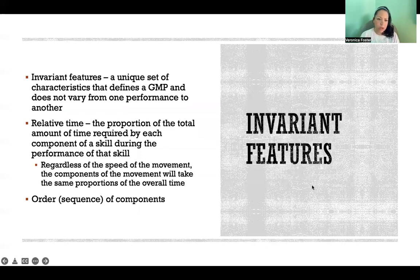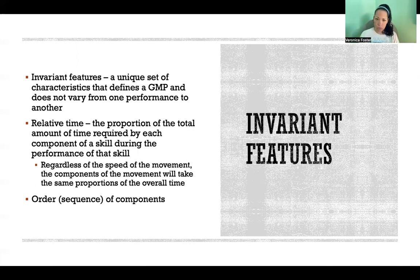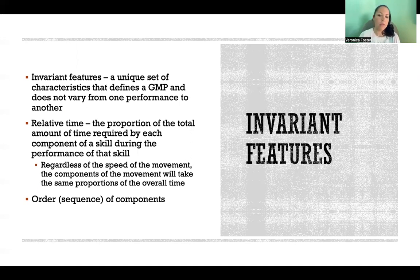Invariant features refers to the unique set of characteristics that define a GMP. If we are categorizing movements based on their fixed features and calling that a GMP, those invariant features are the fixed characteristics of that group that define the GMP. An example of an invariant feature would be relative time — the proportion of the total amount of time required by each component of a skill during the performance of that skill.